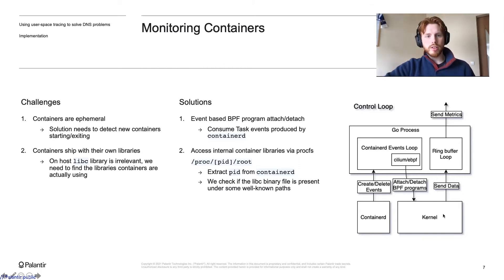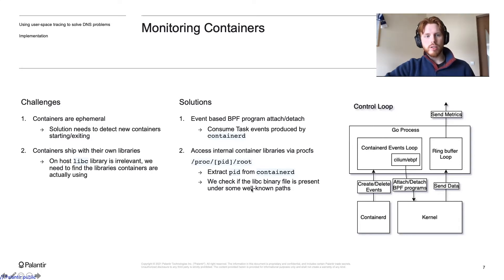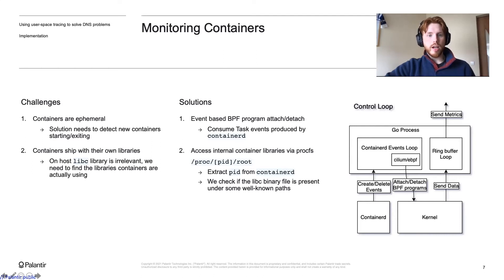On the right, you can see the whole control loop. It all starts with containerd emitting create or delete events. We consume those events, extract the PID, check if the container has the libraries we are looking for, and delegate to the Cilium eBPF library to either attach or detach the BPF programs. The BPF programs then intercept every DNS call and send the data back to our Go program, where we aggregate the data and send it upstream.